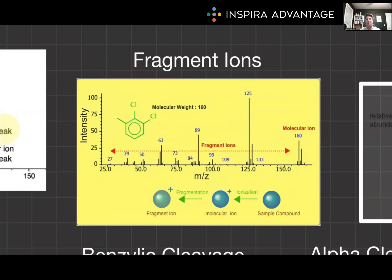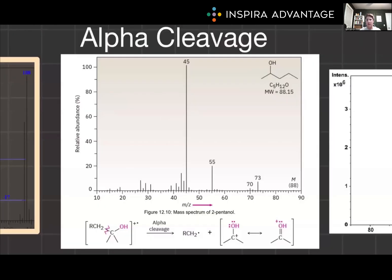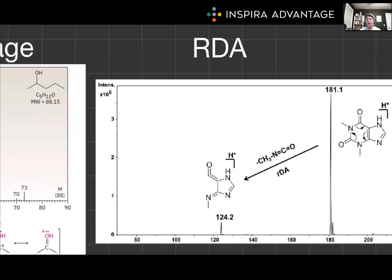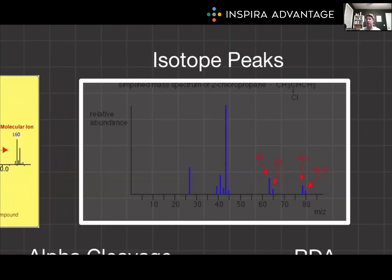Then we've got our fragment ions — everything else. They're formed when the molecular ion undergoes bond cleavage and breaks into smaller pieces. The M/Z values of the fragments provide information about the structural features of the molecule. Some common fragmentation patterns include alpha cleavage, which is the cleavage of the bond adjacent to the heteroatom — oxygen, nitrogen, sulfur. In the diagram, the heteroatom's adjacent bond is cleaved, not the bond attaching the heteroatom itself, which is why it's called alpha cleavage at the alpha carbon. Then we have benzylic cleavage, the cleavage of the bond next to an aromatic ring. Less important is the retro-Diels-Alder or RDA fragmentation, which is the cleavage of a six-membered ring into two smaller fragments. Recognizing these fragmentation patterns can help you deduce the structure of the molecule — think of it as the fingerprint of the molecule.